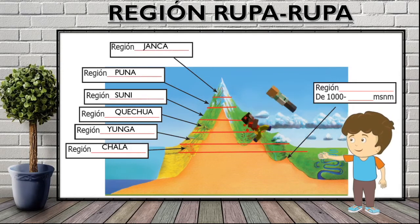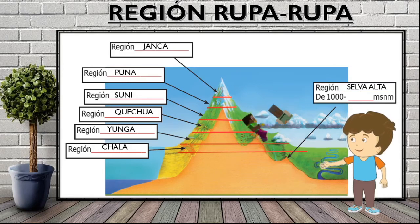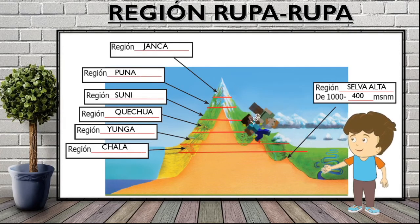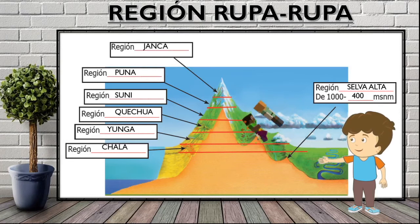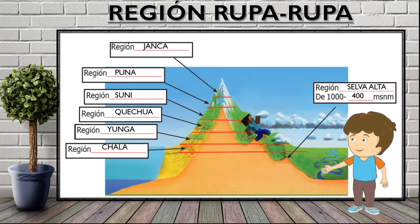Y como ves, primero hemos subido, ahora hemos bajado. Ahora nos toca la región Selva Alta o Rupa Rupa. Por eso te mencioné que primero habíamos subido y ahora estamos bajando, porque va de los 1000 metros hacia los 400 metros. Ya nosotros vamos de 1000 hacia abajo, hacia los 400 metros sobre el nivel del mar, porque ya nos encontramos en el lado oriental de la Cordillera de los Andes.